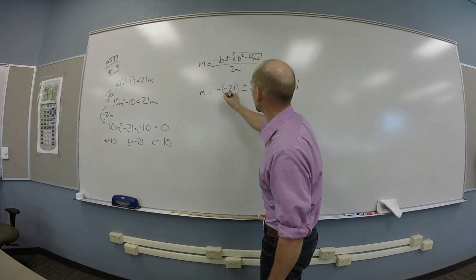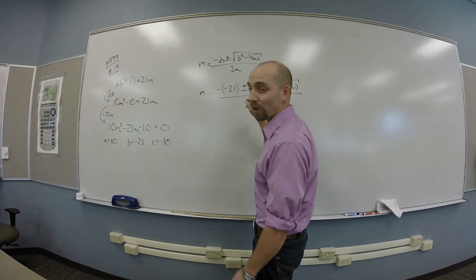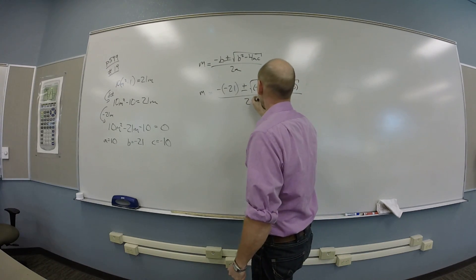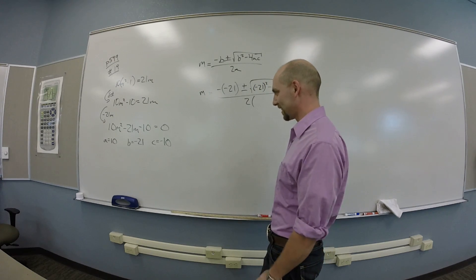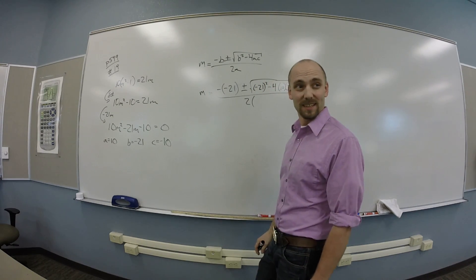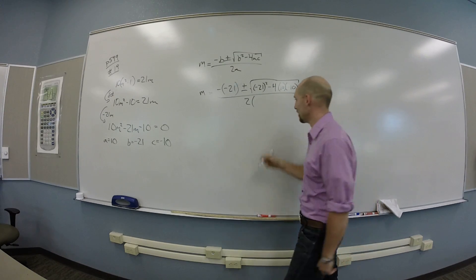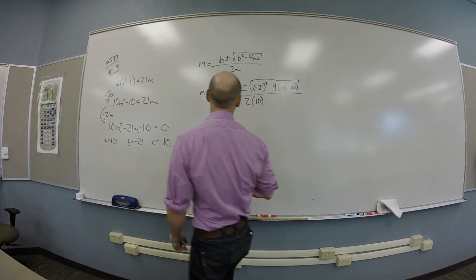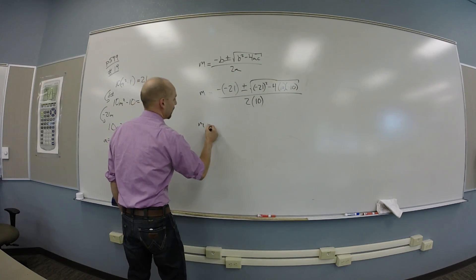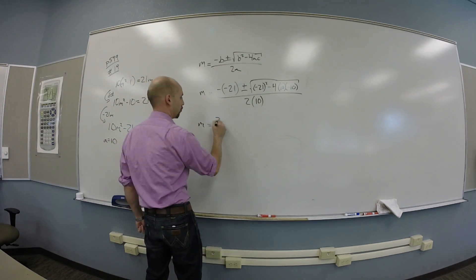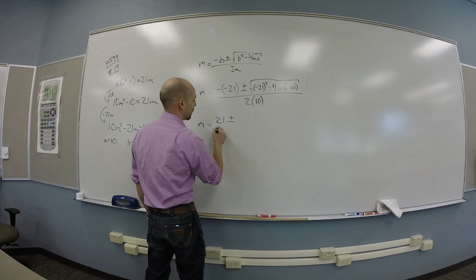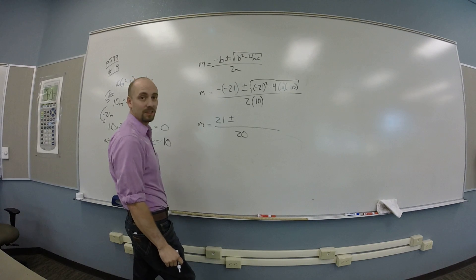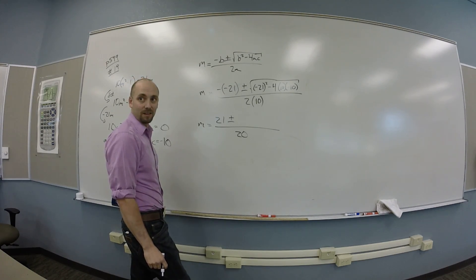And twice 10, 10. Thank you. Okay. So simplifying things that I know, m is 21 plus or minus over 20. What's in the plus or minus? Plus square root of 441.